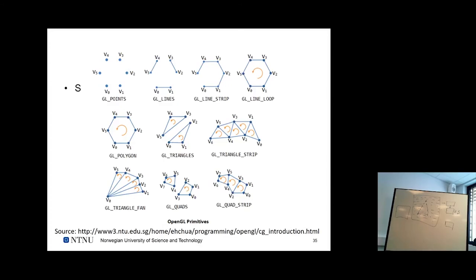A triangle strip reuses the last two vertices as the base for the next triangle — vertex 0-1-2 form the first triangle, then 1-2-3 form the next, and so on. A triangle fan always links the last vertex and the very first vertex, creating a fan structure. There are also quad variants, though support in our current framework is uncertain.